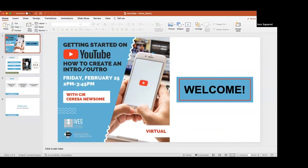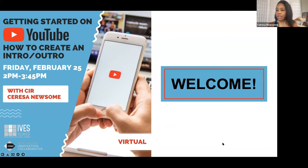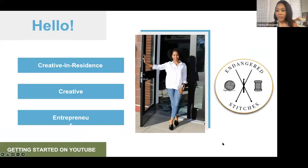Welcome everyone, thanks for joining us for part two of getting started on YouTube. Today we are going to go over how to create an intro and an outro, or you can call it an end cap, for your YouTube video. The last session was about how to get started, how to set up your channel and how to create your banner art. If you missed it, please go back to the New Haven Free Public Library YouTube and Facebook page. I am Sarissa Newsome, the Creative in Residence here at the Ives Main Library in New Haven, Connecticut.